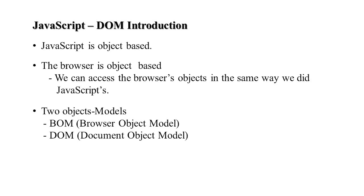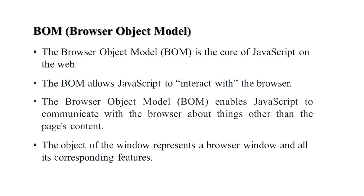JavaScript is object-based and the web browser is also object-based, meaning we can access browser objects in the same way we do in JavaScript. There are two object models: one is the Browser Object Model and the other is the Document Object Model. The Browser Object Model is the core of JavaScript on the web browser — it allows JavaScript to interact with the browser and communicate about things other than the web page content.